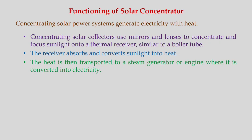This concentrating solar power system generates electricity from heat. These concentrating solar collectors use mirrors and lenses to concentrate and focus sunlight onto a thermal receiver, similar to a boiler tube in a conventional power plant. The receiver absorbs and converts sunlight into heat, which is then transported to a steam generator or engine where it is converted to electricity. Unlike solar PV which converts sunlight directly, concentrating collectors utilize thermal energy — solar energy is first converted to heat, then heat is converted to electricity.